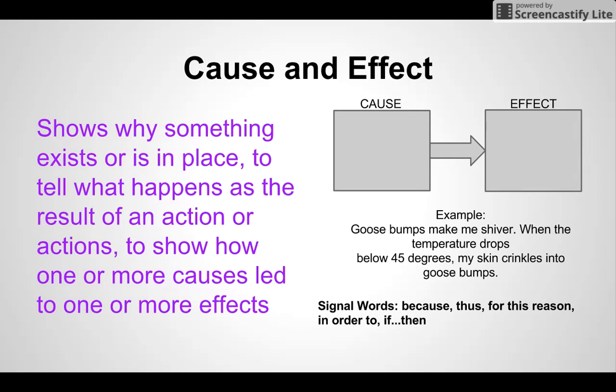why something exists or is in place, to tell what happens as the result of an action or actions, to show how one or more causes led to one or more effects. For example, goosebumps make me shiver. When the temperature drops below 45 degrees, my skin crinkles into goosebumps. The signal words you might see are because, thus, for this reason, in order to, or if-then.